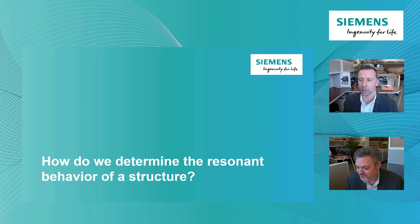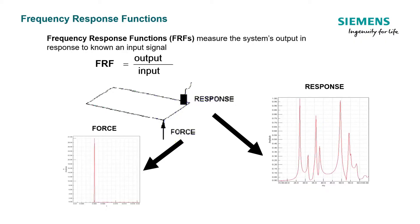So how do we determine the resonant behavior of a structure? Well, we want to put a force into that structure and we want to measure the response. And when we perform this type of test by putting in a force and measuring the response, we can use those inputs and outputs to determine what we call FRFs. And the equation for that FRF is shown here where we have the output divided by the input.